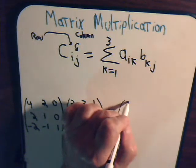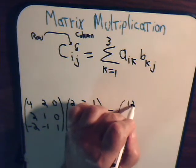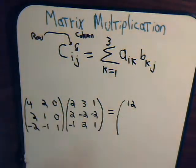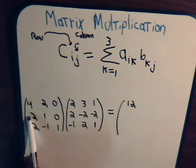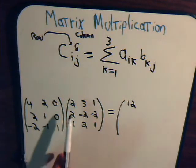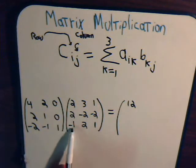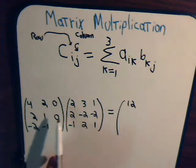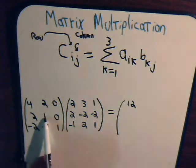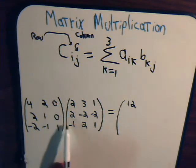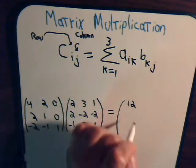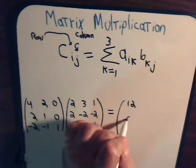So this first number is twelve. Now what comes beneath it — to determine that number, we go to the second row and go all the way across and down the first column again. Here we have two times two is four, plus two is six, and that's zero, so that gives us a six.